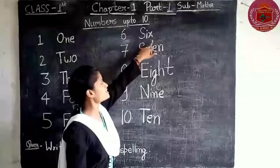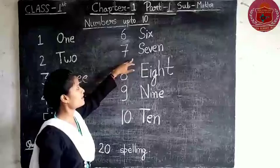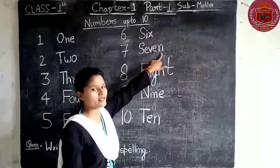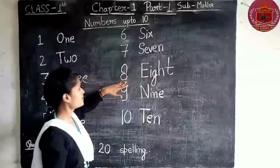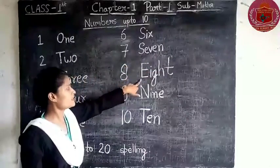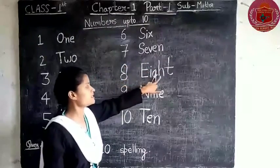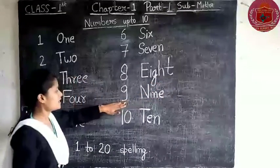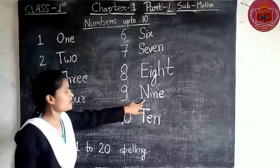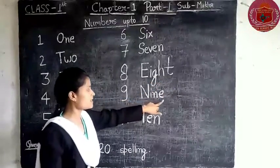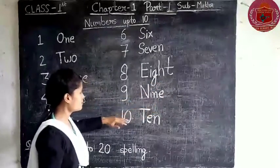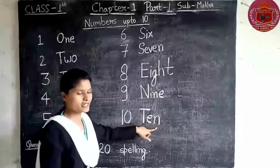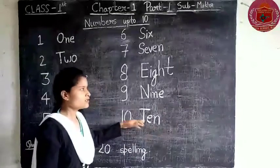Continuing: 6 is S-I-X, 7 is S-E-V-E-N, 8 is E-I-G-H-T, 9 is N-I-N-E, and 10 is T-E-N.